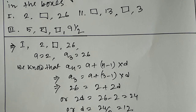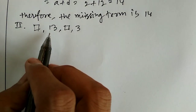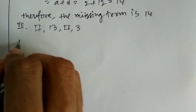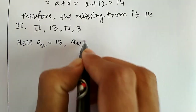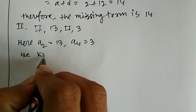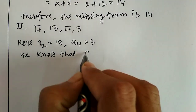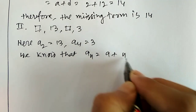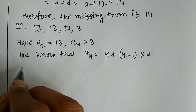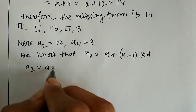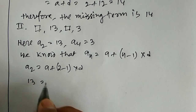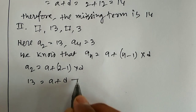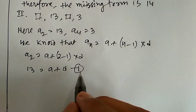Now we solve question number 2: box, 13, box, 3. In this question the second term is 13 and the fourth term is 3. So a2 equals 13 and a4 equals 3. We know that a_n equals a plus (n minus 1) into d. So a2 equals a plus (2 minus 1) into d, giving us 13 equals a plus d. This is equation number 1.